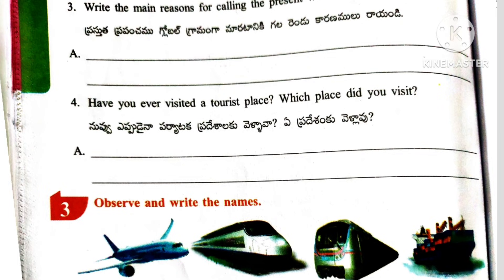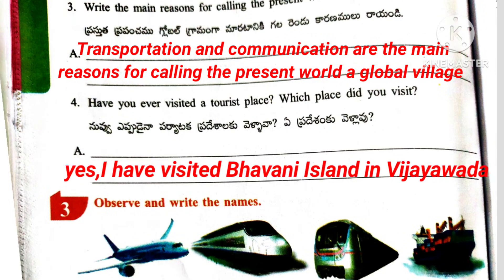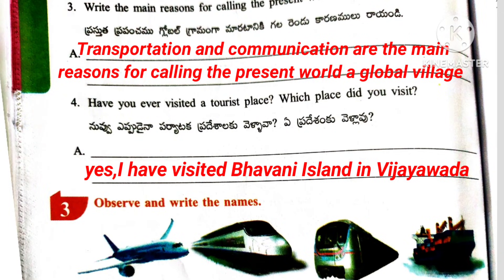Question number 3: Write the main reasons for calling the present world a global village. Answer: Transportation and communication are the main reasons for calling the present world a global village. Question number 4: Have you ever visited a tourist place? Which place did you visit? Answer: Yes, I have visited Bhavani Island in Vijayawada. Students, here you can write another place which you visited.